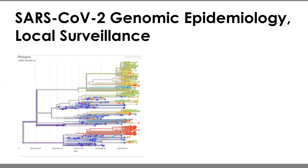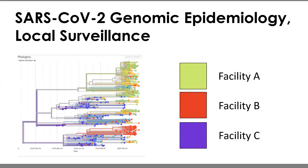At the local level, we hope to do exactly the same thing that's happening internationally — rather than color-coding by countries, we'd be looking at facilities A through C, examining the local distribution of the pathogen to start assessing things like community transmission versus introduction events, identifying geographical hotspots, tracking the evolution of the virus, and making more informed decisions at the local level.